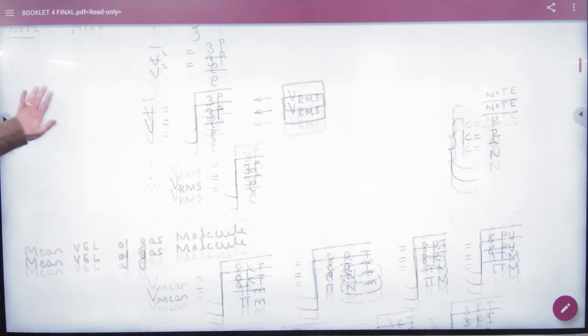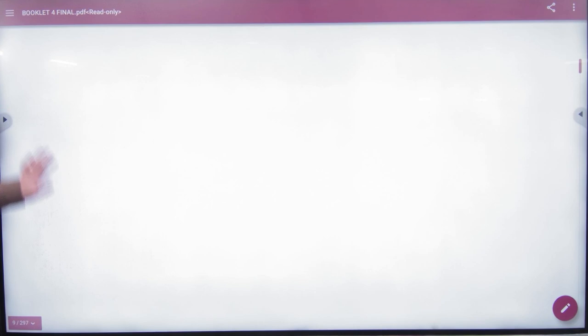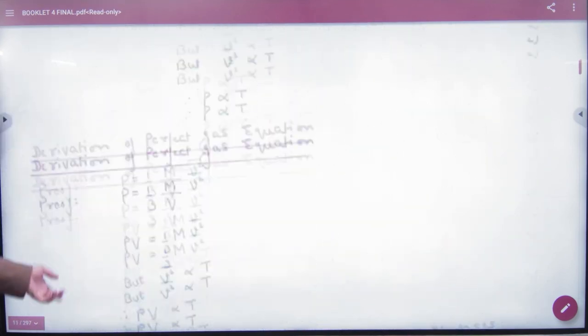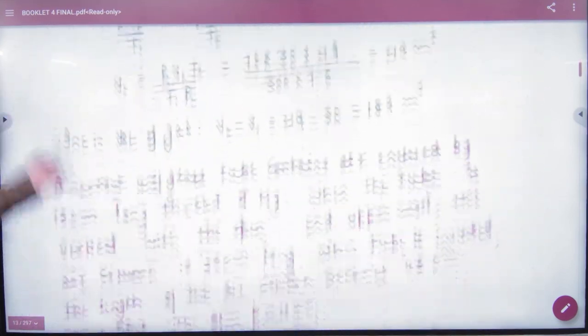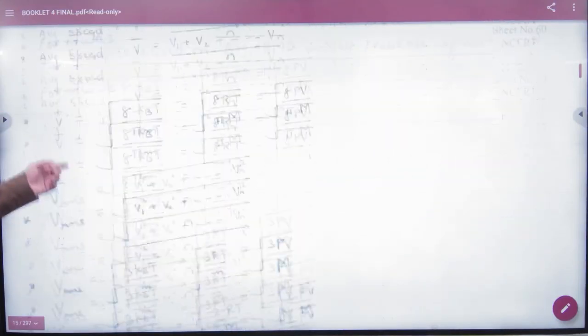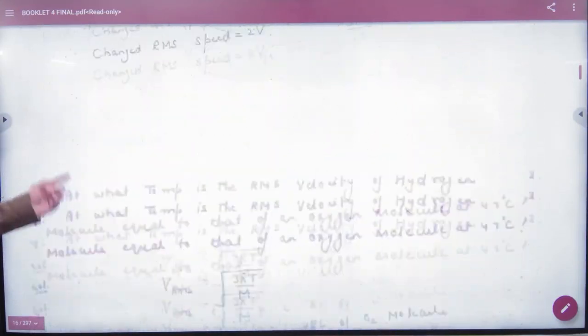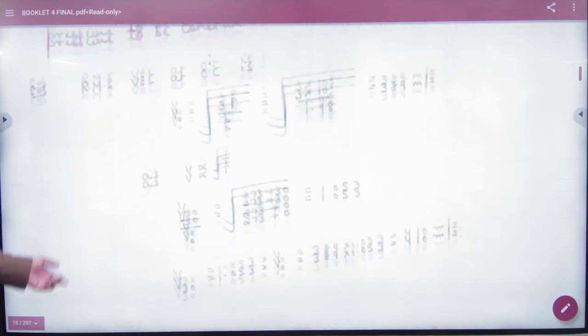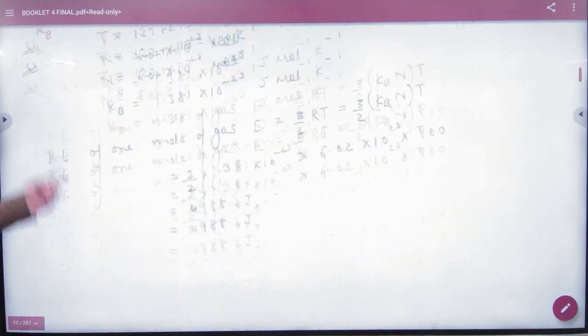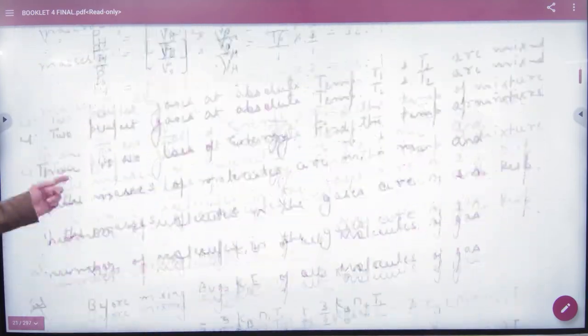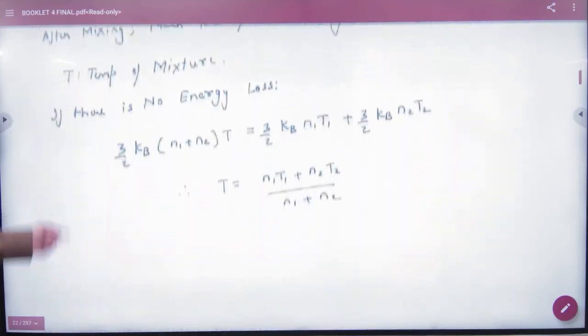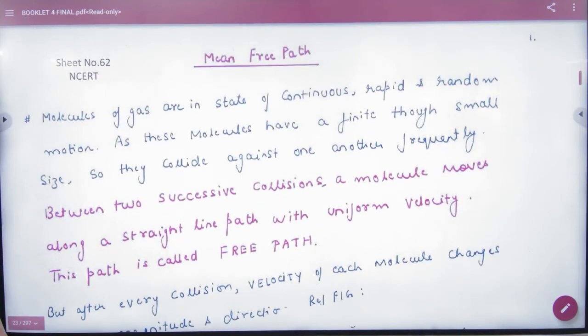So this was last time. Based on this, we had derivations of the laws I mentioned. Then we had some numerical problems, RMS numericals, that we discussed last time. And some numericals on average pressure. Today what do we have to do? Mean free path. So the mass confusion is resolved.